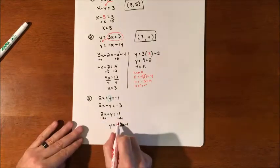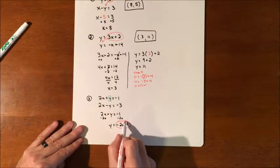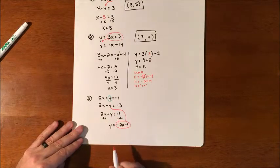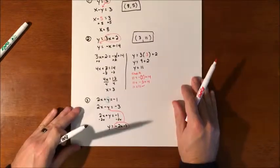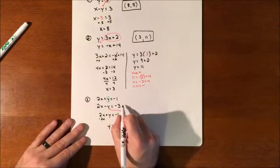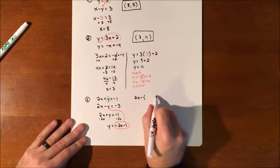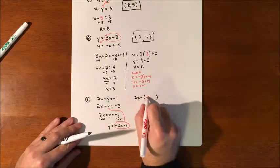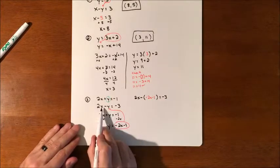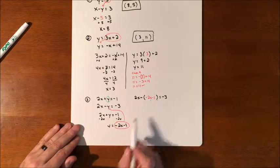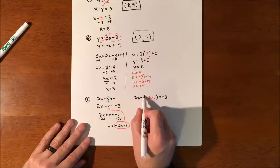From 2x plus y equals negative 1, we move the 2x over by subtracting, so y equals negative 2x minus 1. Now we can do substitution. The y value equals negative 2x minus 1, so this y in the second equation also equals negative 2x minus 1 — just like at the very beginning when y equaled 5. So we plug that into the second equation: 2x minus (negative 2x minus 1) equals negative 3. Now we can solve for x.